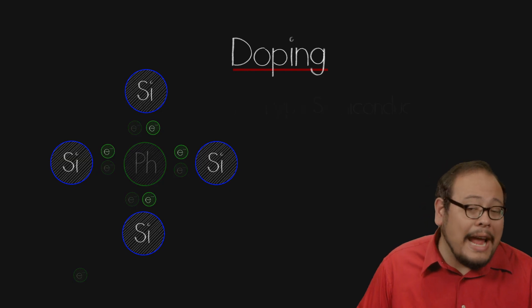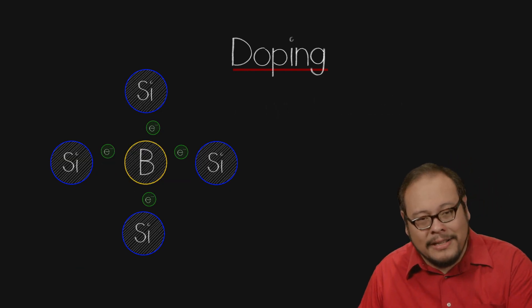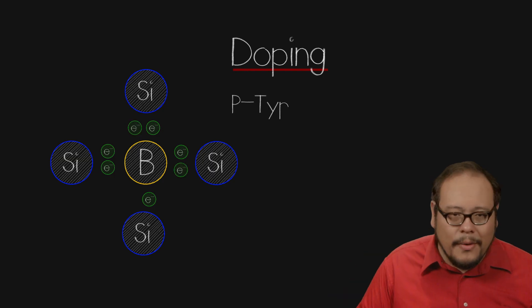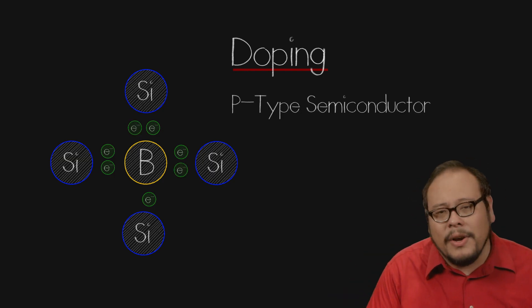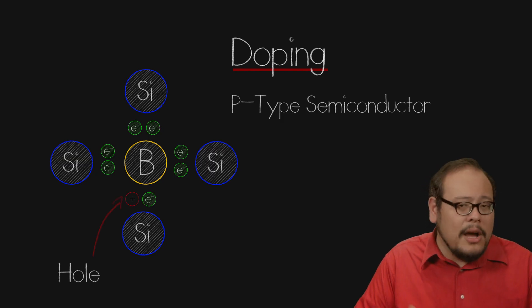Contrarily, if we add an element with only 3 electrons in its outer shell, say boron, we create a P-type semiconductor. The missing electron creates what's called a hole, a space that attracts a free electron.